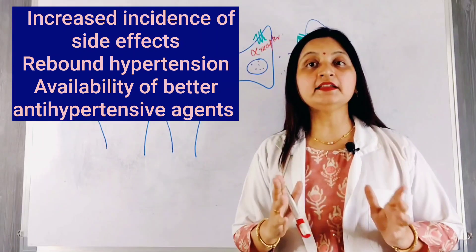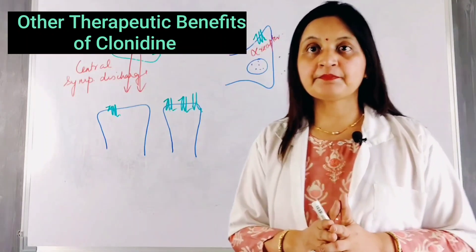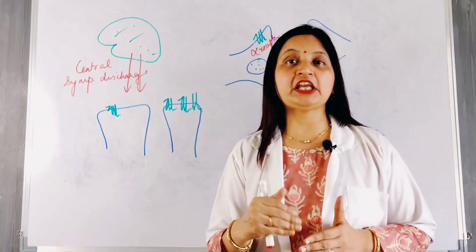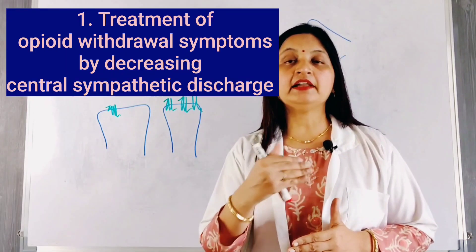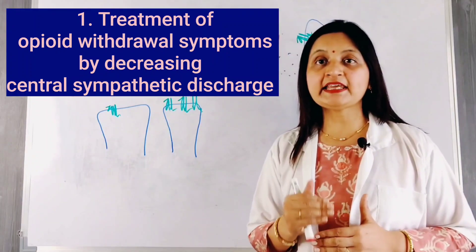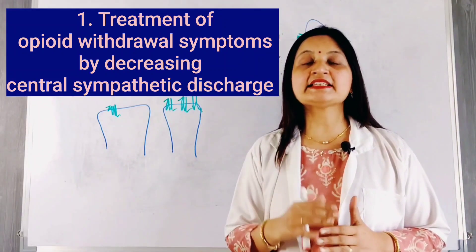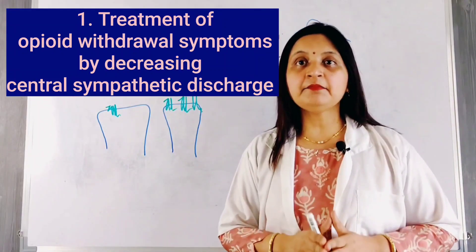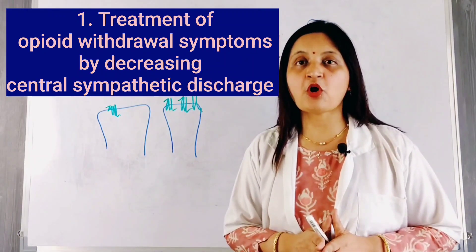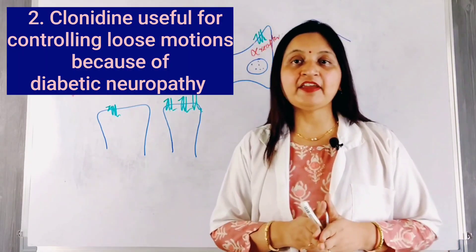However, clonidine has other therapeutic benefits. It is useful in the treatment of opioid addiction. Opioid withdrawal is associated with overactivity of the sympathetic system and large release of epinephrine and norepinephrine, causing symptoms of tachycardia, tachypnea, rise in blood pressure, restlessness, and anxiety. Clonidine, by decreasing central sympathetic discharge, helps control symptoms of opioid withdrawal and helps reduce craving for the drug.